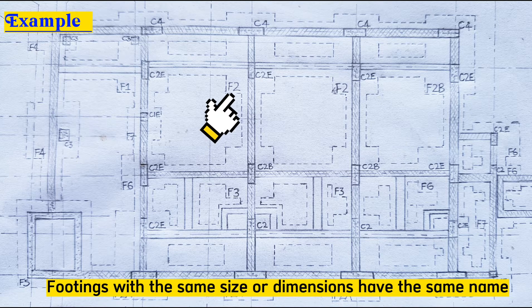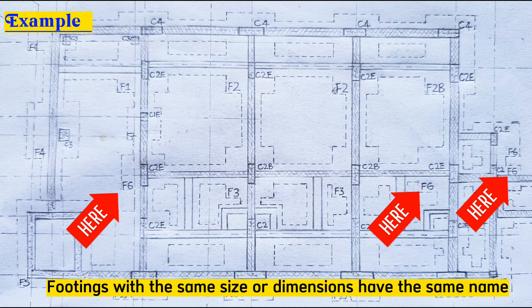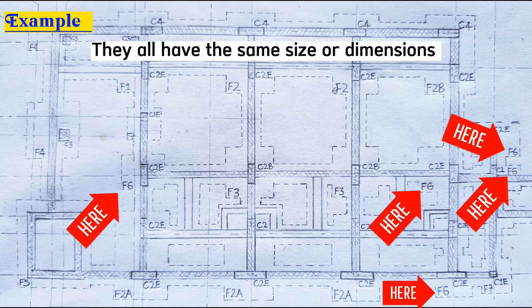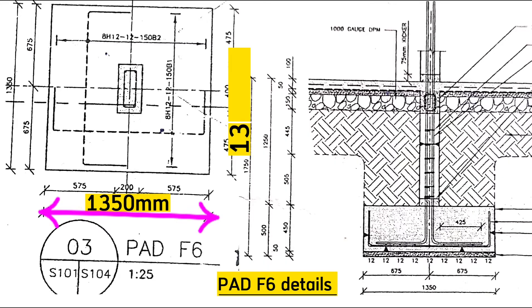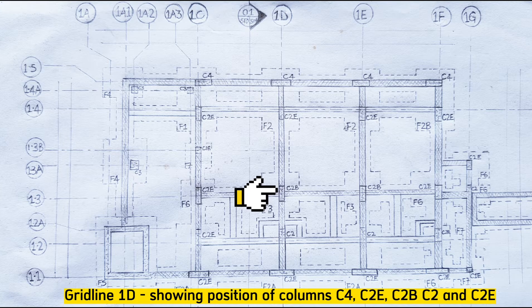For footings with the same size or dimensions, we give them the same name. For example, this is footing F2, and this one here is also footing F2, meaning they have the same size. There is always a separate drawing showing the details of each footing — for example, all footings labeled F6 will be 1 meter 350 millimeters on one side and 1 meter 350 millimeters on the other side, plus all other details. Grid line 1D shows the position of columns C4, C2E, C2B, C2, and C2E.